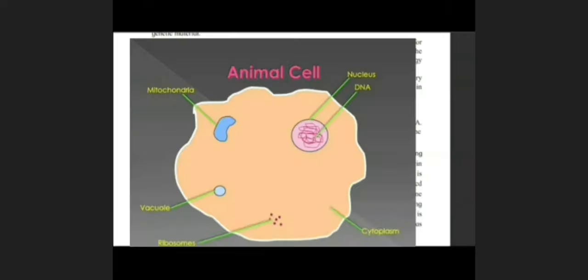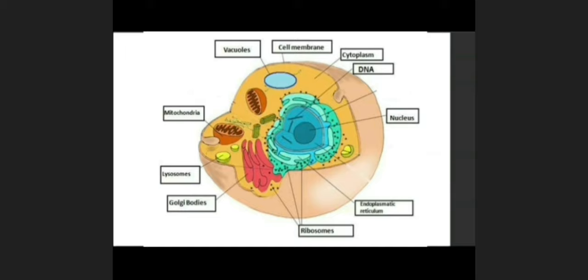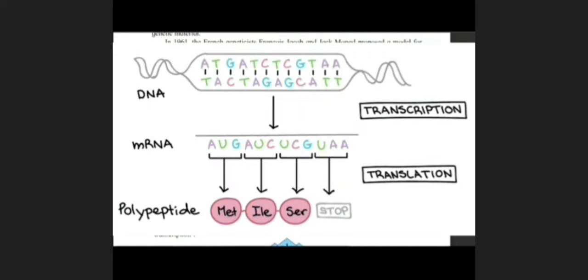This is the structure of a cell. In that cell, nucleus is present. In nucleus, nucleoplasm is there. In cell, cytoplasm is there. In nucleus, DNA is present. And this DNA forms mRNA, or this DNA synthesizes the mRNA. And this process of synthesis of mRNA from DNA is called transcription.